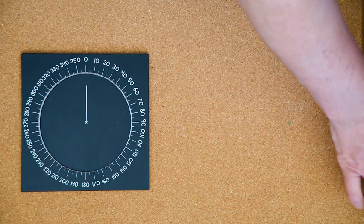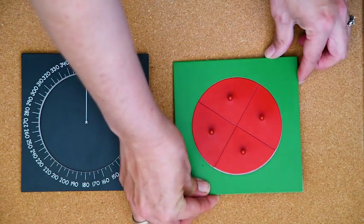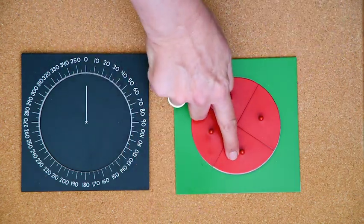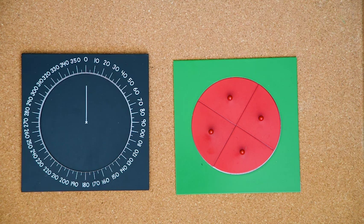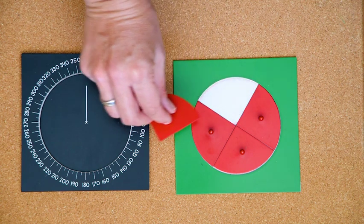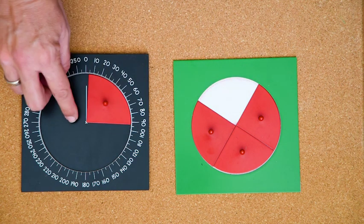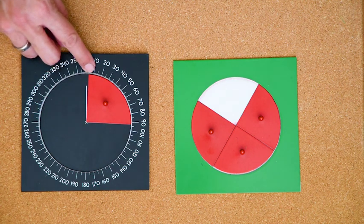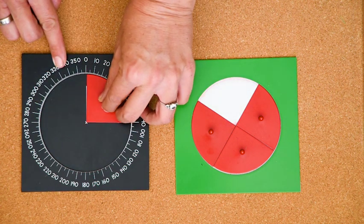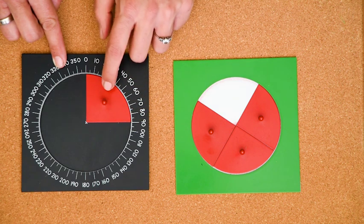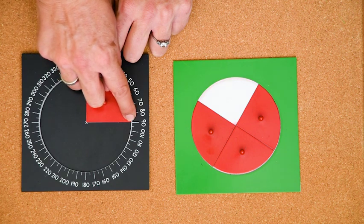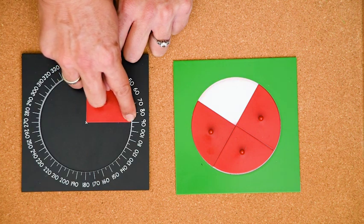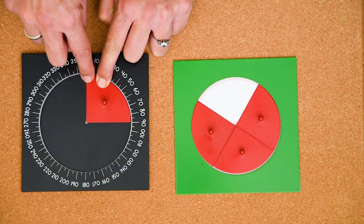Let's look at some of the fraction pieces I have here. Here, I have the fraction set for fourths. I wonder how many degrees 1 fourth is. We are going to place it on the vertex and line this side up with a zero.